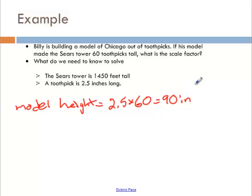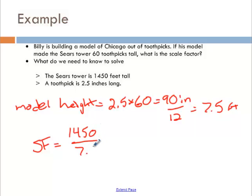We want to find what the scale factor is. When I go and do this, I want to change 90 inches into feet. So I'm going to divide that by 12. And 90 divided by 12 is 7.5. So he's building a scale model where the Sears tower is 7.5 feet. My scale factor is when I take the height of the regular Sears tower and I divide by the model height, and 1450 divided by 7.5 is 193.3. So my scale factor is that the model, it would take 193.3 models to make the regular Sears tower.